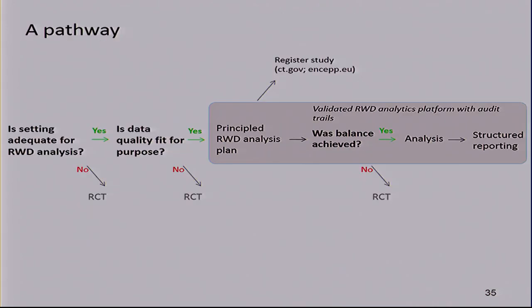This leads to a pathway I have in mind. Start on the left: is the setting adequate for real-world data analysis? Many times the answer will be no because the outcome is not observed. Then go to the RCT. But if it is adequate, ask: is the data quality fit for purpose? If yes, write your study analysis plan, register and deposit it, then do your balance check before looking at the study outcome. You can still abort at this point — if you don't achieve balance, you can say it doesn't make sense to move forward because you'll get a biased finding. Then move forward with the analysis and structured reporting.